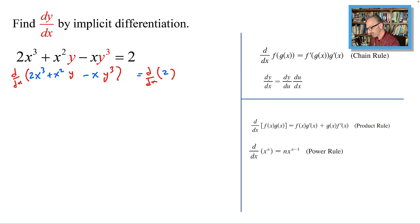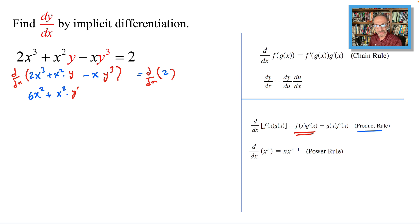The derivative of 2x³ will be 6x². Plus the derivative of x²y — we'll be using the product rule — we'll have x² times y prime (that's f(x) times g'(x)) plus y times the derivative of x², which is 2x. So this part's derivative gives us these two terms.